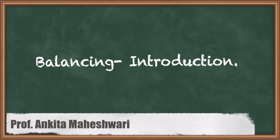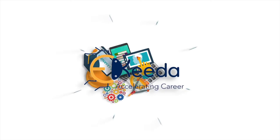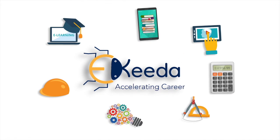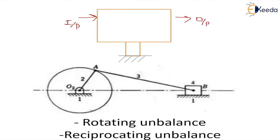Hello everyone. In this video we'll discuss about balancing. While designing a machine, we take into account factors such as the kinematics, the forces, the movements which are acting from input to output in such a way that all the links of the machine are able to endure the forces exerted upon them, so that the frame which is supposed to be fixed is not subjected to any types of forces and movements.